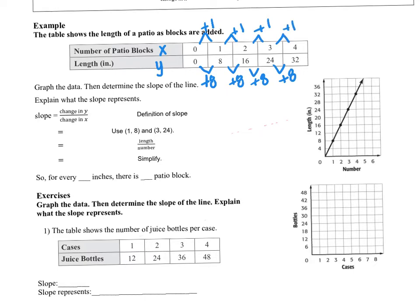So if I write that, I would say change in y over change in x. And I would get 8 over 1. What does that simplify to? 8. So that is our slope. That is one way to find it.